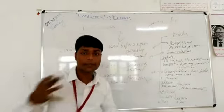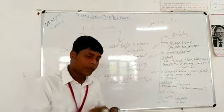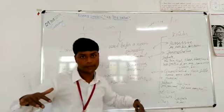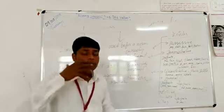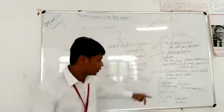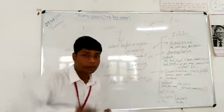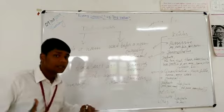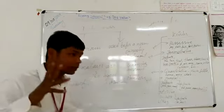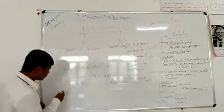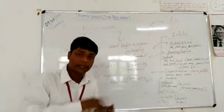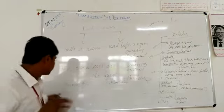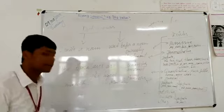The indefinite articles 'a' and 'an' are both indefinite. 'A' is used with singular things that begin with a consonant sound, and 'an' is used with singular things that begin with a vowel sound. Note the difference: it is about the vowel sound, not the vowel letter. For example, 'university' starts with the letter U but has a 'you' sound, which is not a vowel sound, so we say 'a university,' not 'an university.'